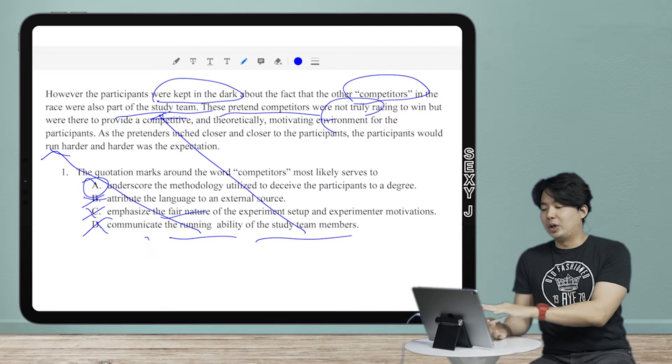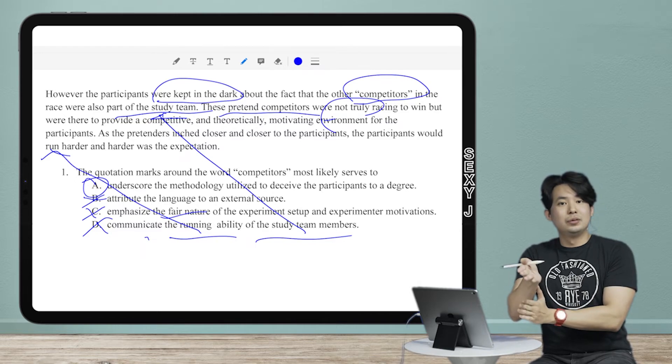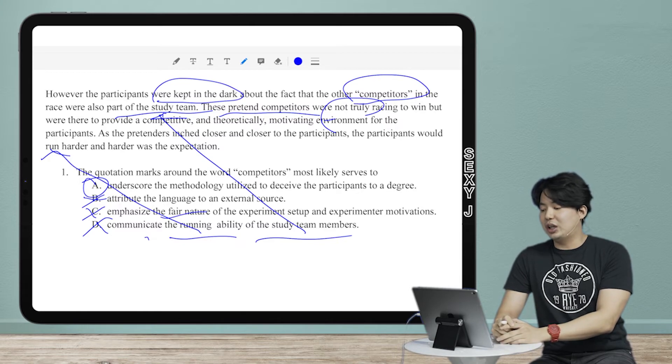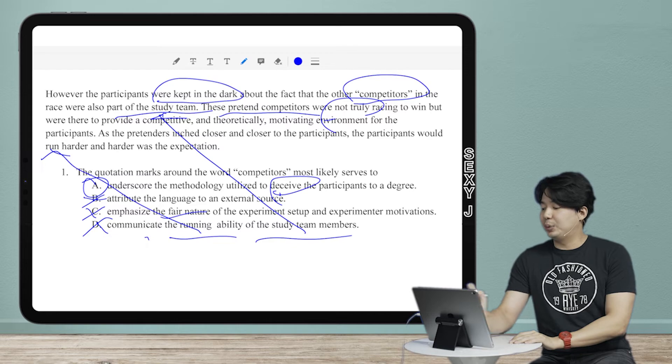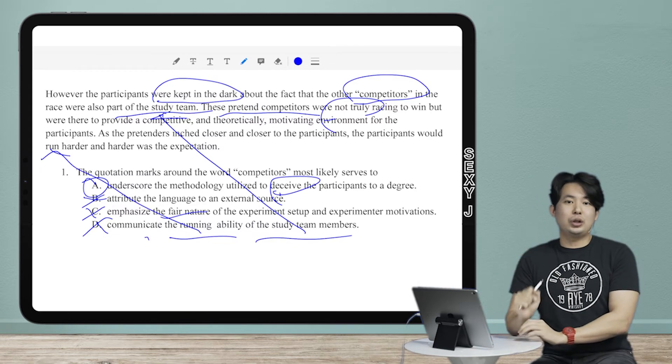So those are the other parts of the strategy you could employ here. But if you guys are actually taking the test, I want you to do it the best way. What is that? The efficient way and the exact way. So it's a quotation question. So these guys are not competitors. What is that? A. Why? Because deceive and kept in the dark and not truly pretend, any of those. If you got just one of those, that'd be fine.